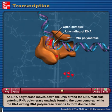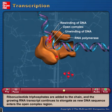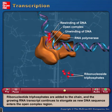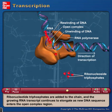The DNA exiting RNA polymerase rewinds to form a double helix. Ribonucleotide triphosphates are added to the chain and the growing RNA transcript continues to elongate as new DNA sequence enters the open complex region.